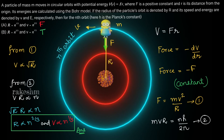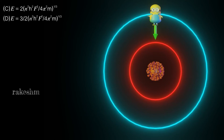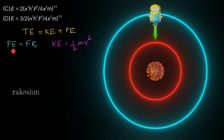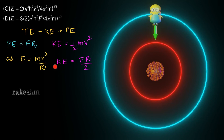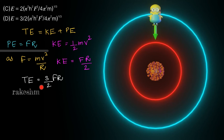Option A is not correct — it is false. Option B is true. For options C and D, we find the total energy: total energy equals kinetic energy plus potential energy. Potential energy is F times R. Since F = mv²/r, we get mv² = Fr, so kinetic energy = Fr/2. Therefore total energy = Fr/2 + Fr = 3Fr/2.